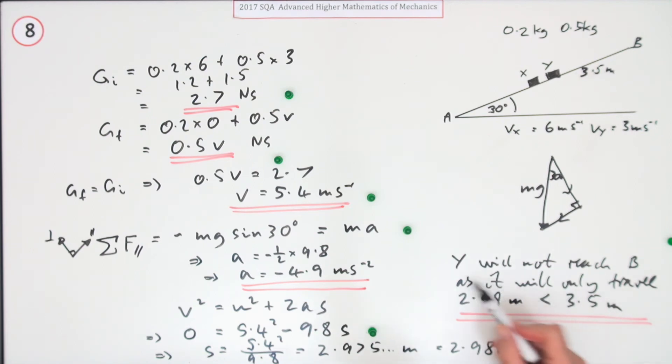Or you could put something else. It will not reach B as it will be, then you could say how much short it is. Because that's 2 centimeters. That's 52 centimeters short. Final mark.